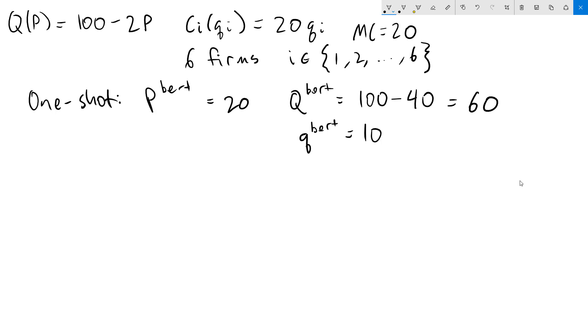How much profit are they making? Well, the price is 20, marginal cost is 20, they're making 0 on every single unit. So as we expect, the profit is going to be 0 for each firm.